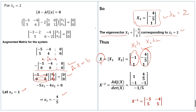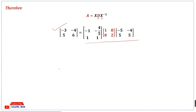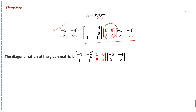We find the inverse of the matrix X. After simplification, we obtain X⁻¹. Therefore, A = X · D · X⁻¹, where D is the diagonal matrix containing the eigenvalues and X is the eigenvectors matrix. The diagonalization of the given matrix A is this product, completing the diagonalization.